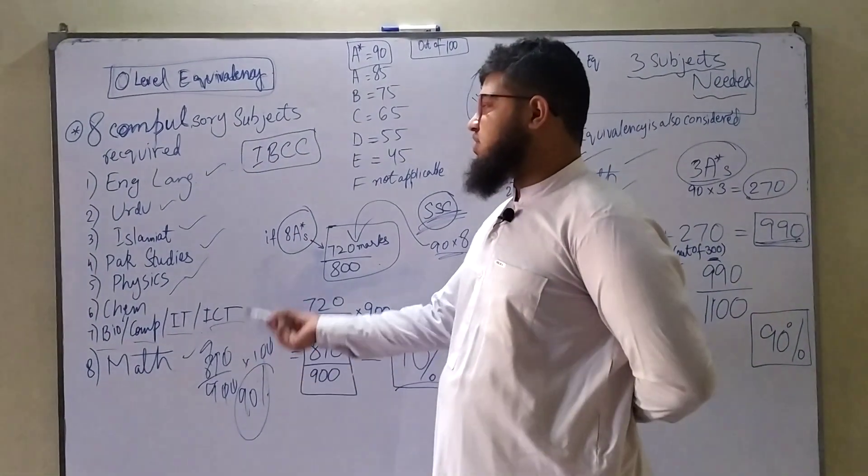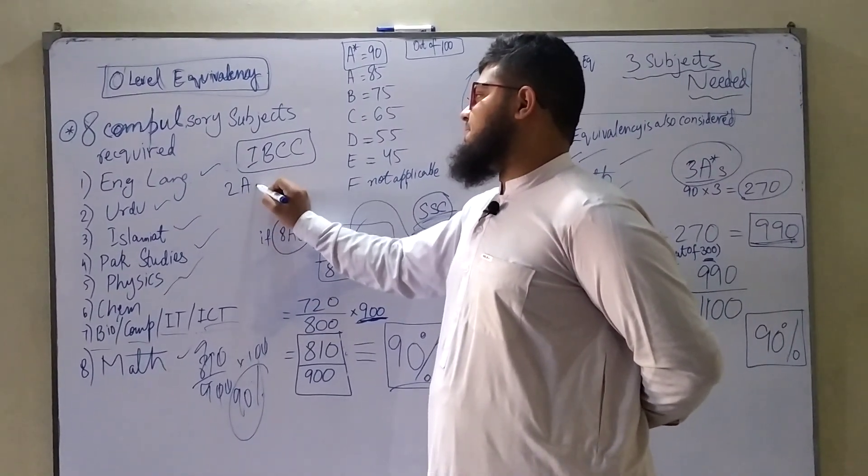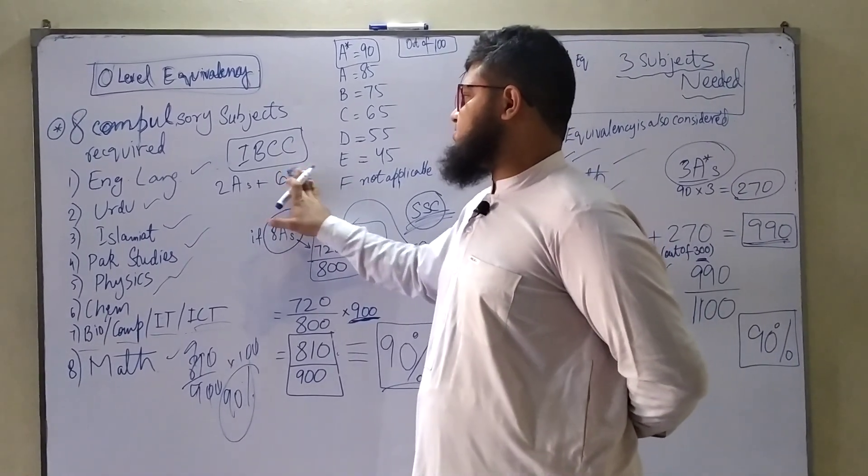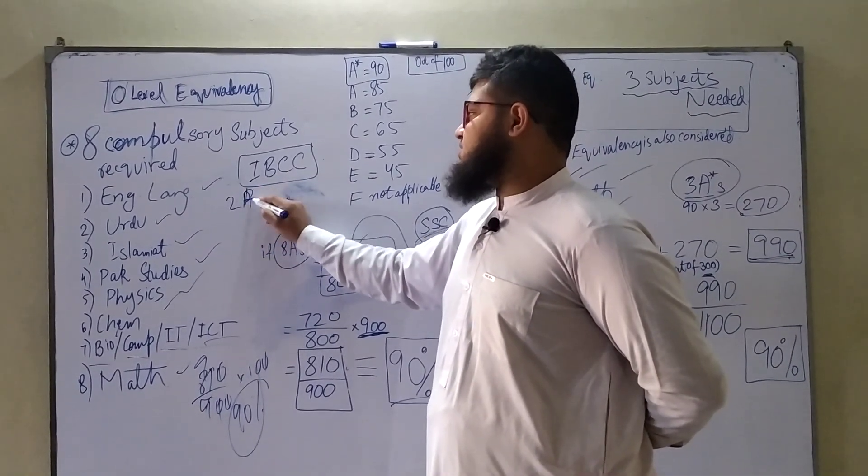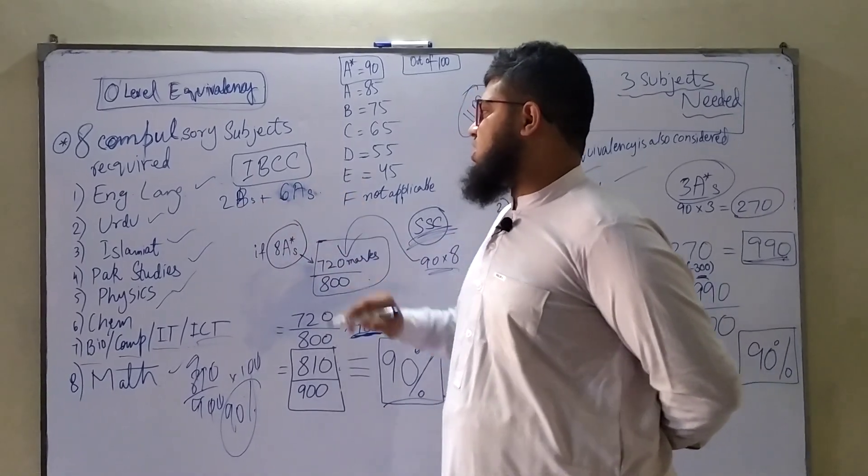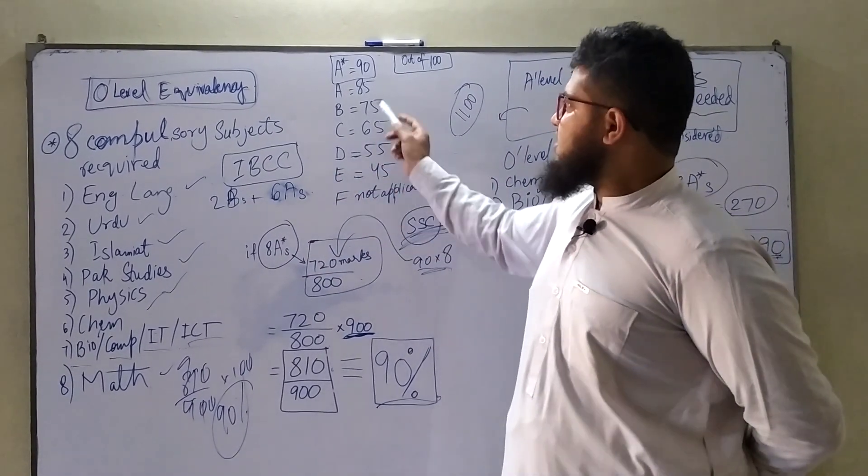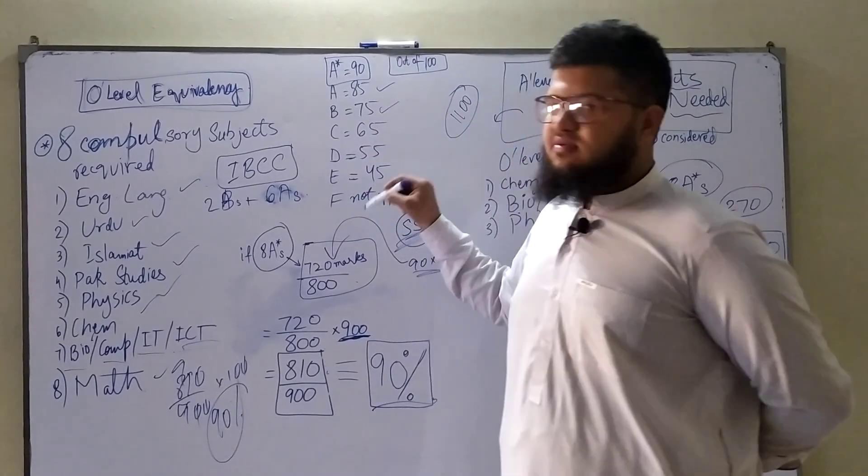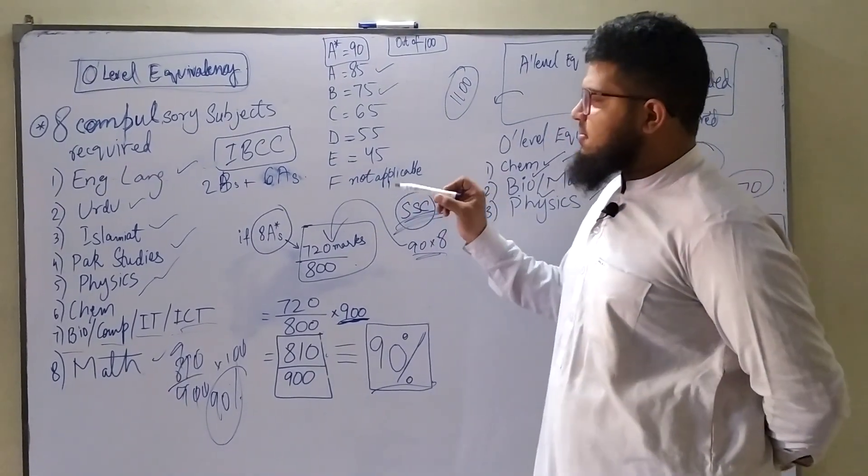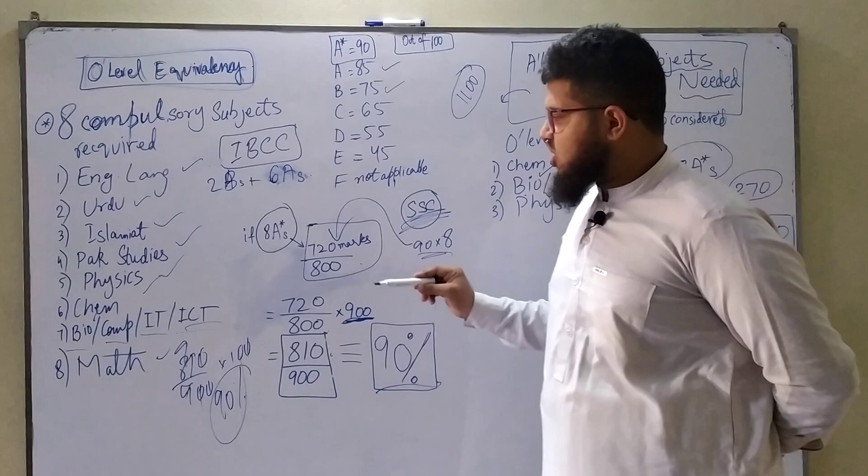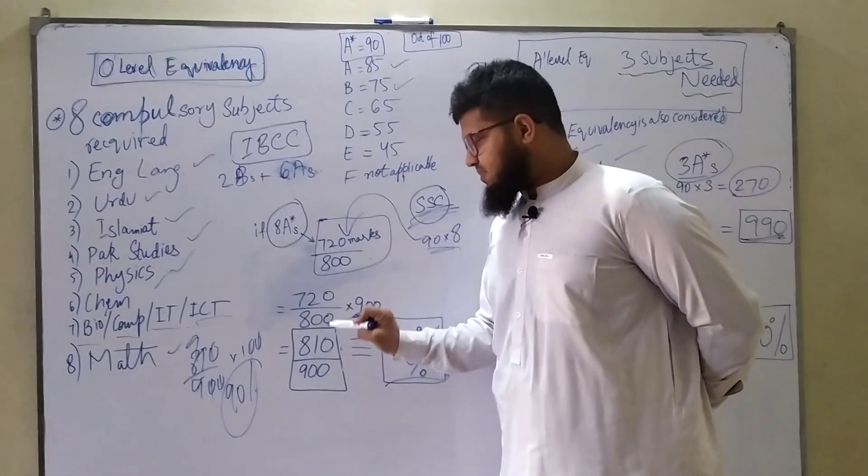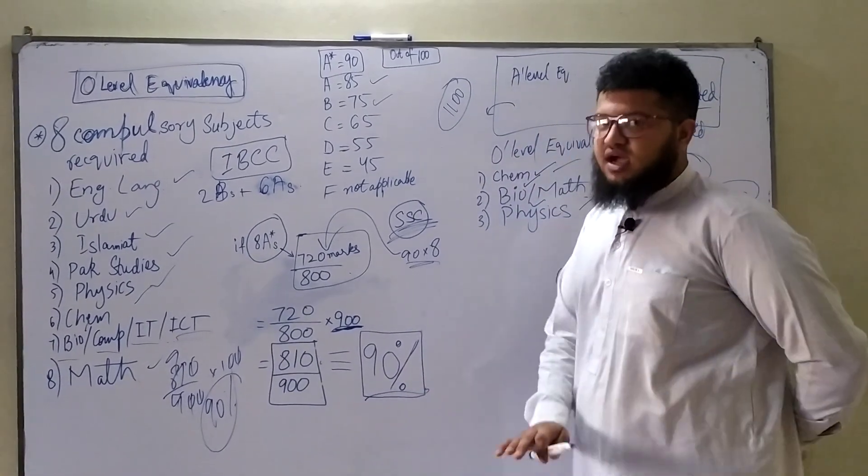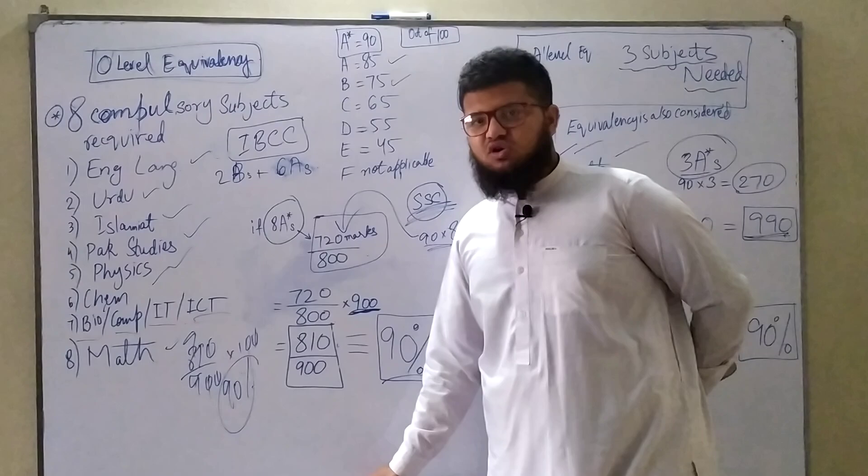If someone else has a different grade, for example, if someone gets 2 B's and 6 A's, then what will their grade be? Apply the same scale: 6 A's means 6 times 85, plus 2 B's means 2 times 75. Add the marks - I'm not doing the math here - but you'll get marks out of 800. Multiply that by 900, you'll get out of 900. Calculate the percentage, that will be your equivalency. Clear guys? If you have any questions related to this, you can ask me in the comment section.